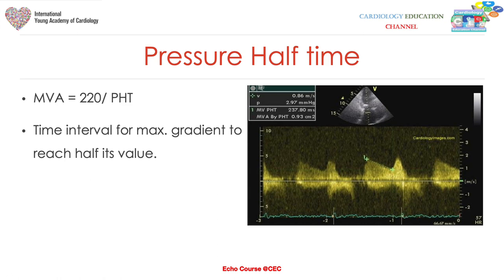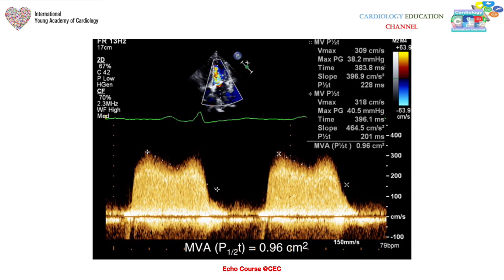Moving on to pressure half-time: this is the time interval for the maximum gradient to reach half of its value in diastole across the mitral valve. You calculate mitral valve area using the formula: MVA = 220 / pressure half-time. To measure it, place one point at the top of the E wave and take the slope parallel to the drop of the pressure trace.